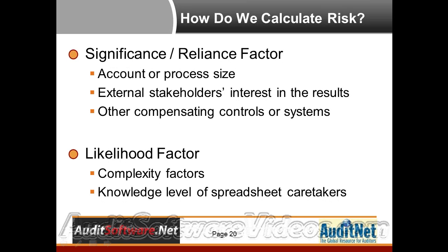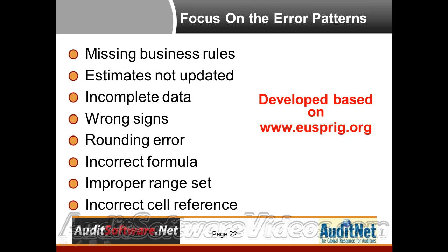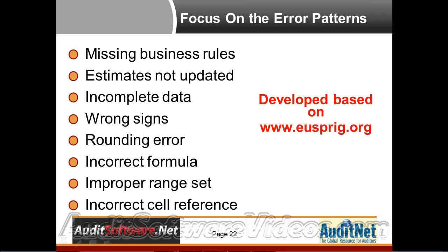So let's take a look at some of these complexity factors. What we're looking at is error patterns. I base this a lot on the usprig.org website, looking at presentations and case studies, and really trying to understand what can go wrong. Some things such as business rules that are just not understood in the Excel spreadsheet — it's kind of hard to know what that is. That's something where auditors need to sit down and really look at the ultimate spreadsheet and say, is it meeting the needs?